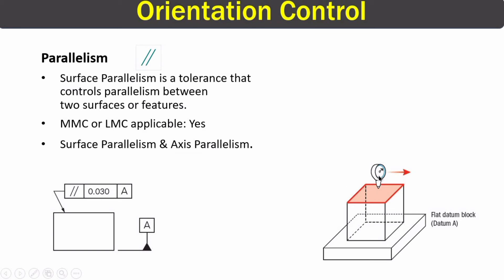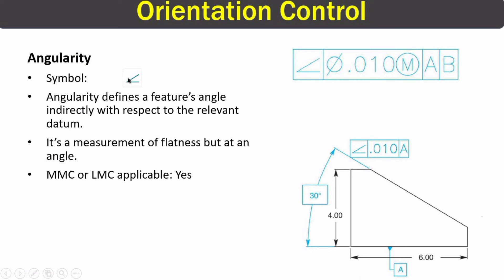Our third and final orientation control is angularity. This is the symbol for angularity. In the feature control frame, we have the angularity symbol, a diameter symbol indicating it applies to a feature, a tolerance value of 0.01 — which is a flatness value measured in millimeters and not an angle — an MMC indicator, and datums A and B. In angularity, we measure the flatness of a surface that is at an angle with respect to a reference or datum.